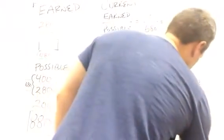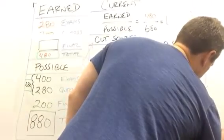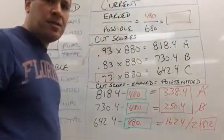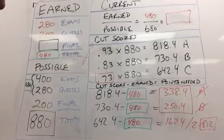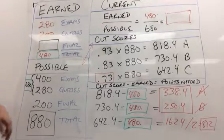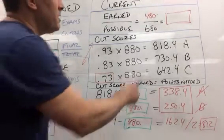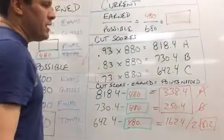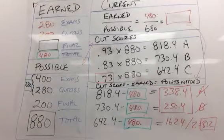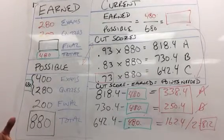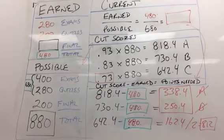162.4 divided by 2 equals 81.2. So in essence they need a B on the final to pass the class if they have these scores. You can mess with these scores all you want, but what I'm trying to tell you is that this number is not nearly as important as these numbers. What we care about is not the current grade, but what the grade is that we need to get on the final to pass the class.